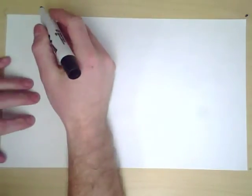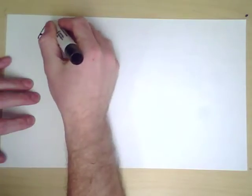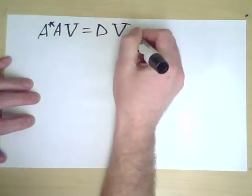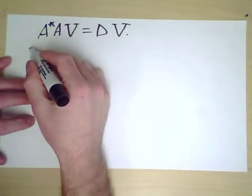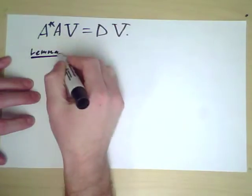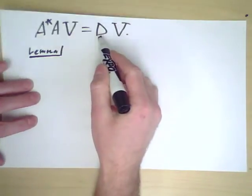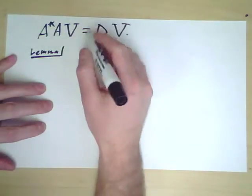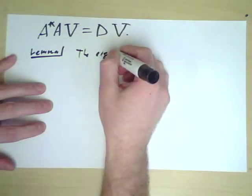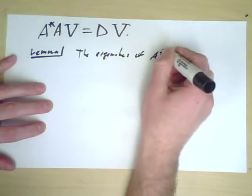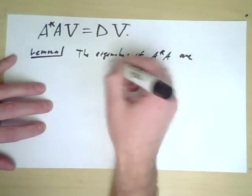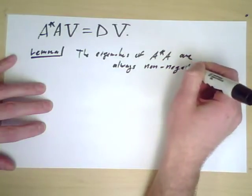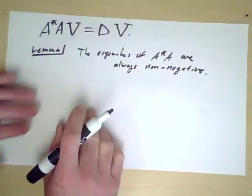So here's our situation. We have A star A V equals D V. Now here's something to verify, here's a lemma. Remember that D is a diagonal matrix with real entries in the diagonal. The lemma is that the eigenvalues of A star A are always non-negative. So not only are they real, but they're either zero or positive.